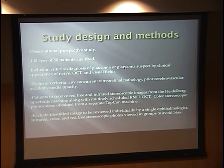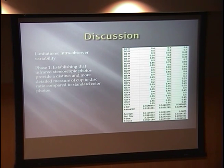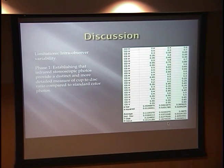I submitted the IRB for this project about two months ago. We don't have a whole lot of eyes yet, but phase one is simply to prove that there's a difference. I called VCU on Monday and got the measurements they had by that point. With a p-value of 0.005, the cup to disc is indeed larger in IR imaging.